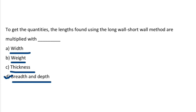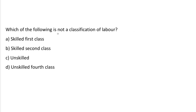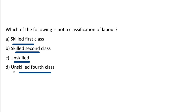Next question: which of the following is not a classification of labor? Option A: Skilled first class. Option B: Skilled second class. Option C: Unskilled. Option D: Skilled fourth class. The correct answer is option D, Skilled fourth class.